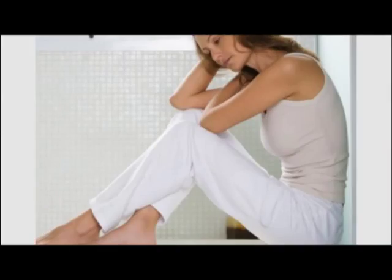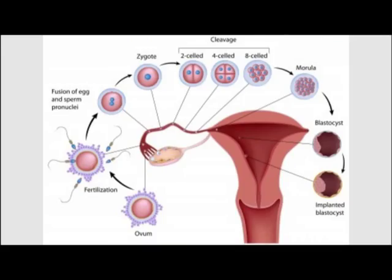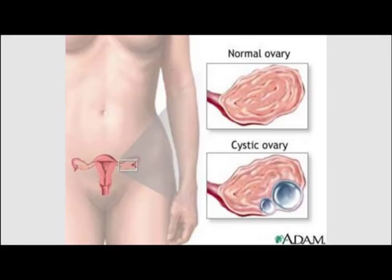In this negative feedback system, if the body has enough estrogen, then no LHRH is produced. However, if estrogen levels are running low, the hypothalamus secretes LHRH. A healthy menstrual cycle is dependent on the proper functioning of this endocrine system.